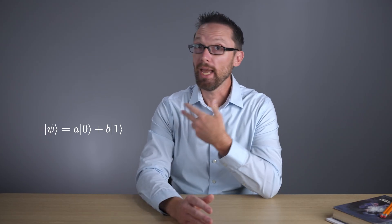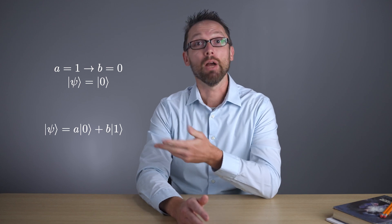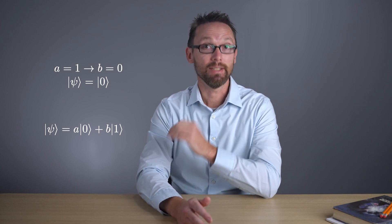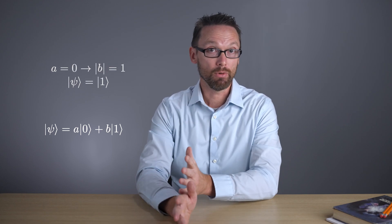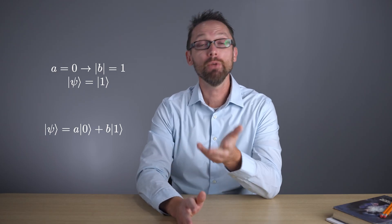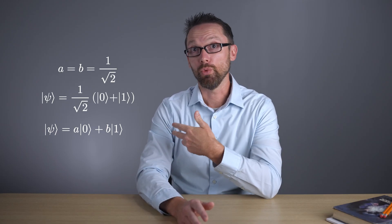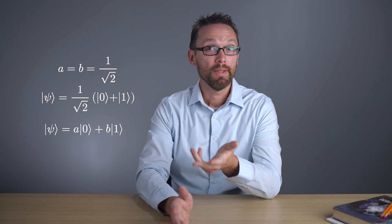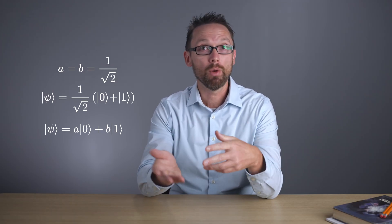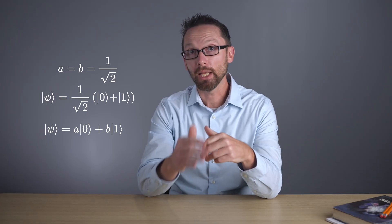So if a is one, b is zero, and our qubit is definitely in the state zero. If a is zero and b is one, then our qubit is in the state one. If a and b are both equal to one over the square root of two, then the qubit is in a superposition of zero and one where both outcomes are equally likely.